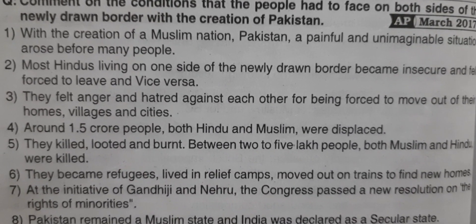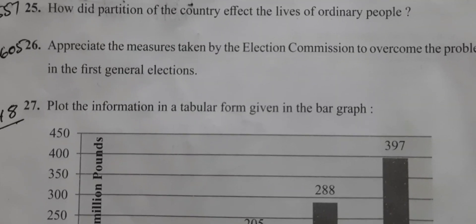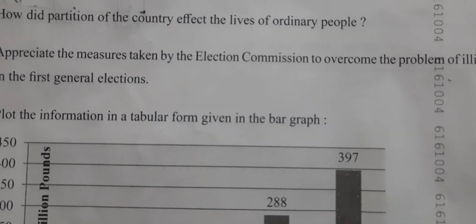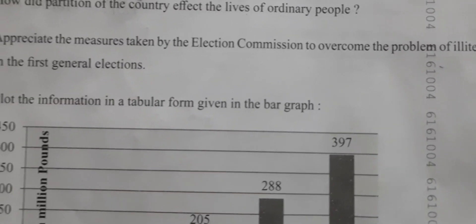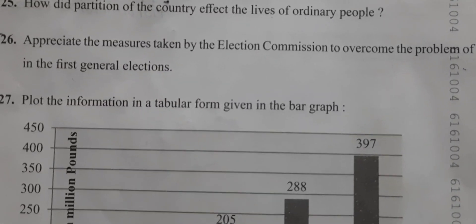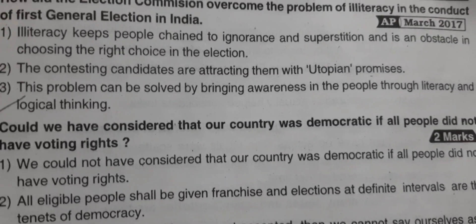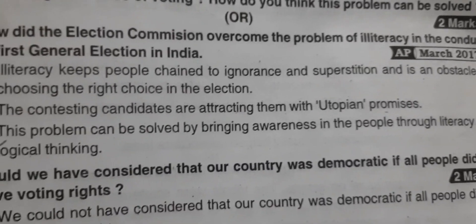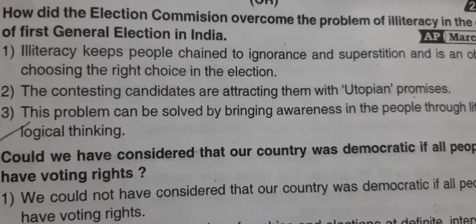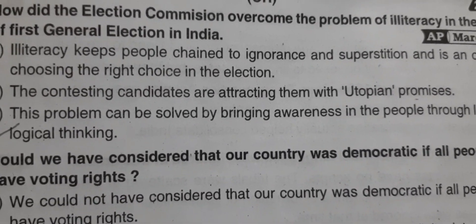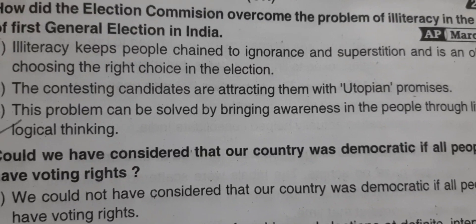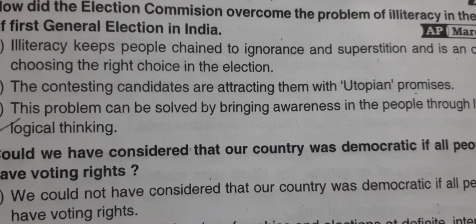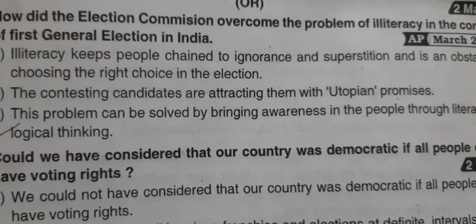Question 26: Appreciate the measures taken by the Election Commission to overcome the problem of illiteracy in the first general elections. Illiteracy keeps people chained to ignorance and superstition, and is an obstacle to making the right choice in elections. Contesting candidates attracted voters with utopian promises. This problem can be solved by bringing awareness through literacy and logical thinking.